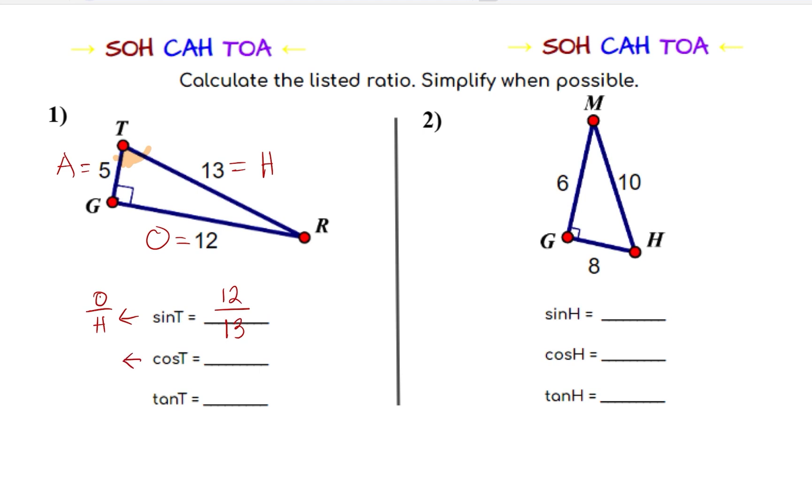Now, cosine T is A over H. So we're going to substitute 5 for A and 13 for H. And again, we can't simplify 5 over 13. So that's going to be our final answer. And the last one is tangent T. So that would be TOA. So O over A substitute 12 for O and 5 for A. So 12 over 5. We can't simplify it into a smaller possible fraction.